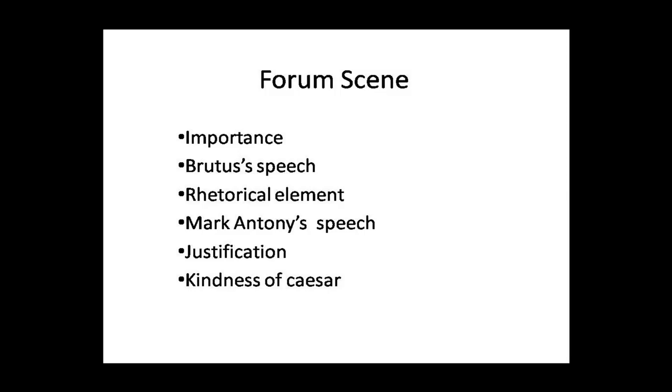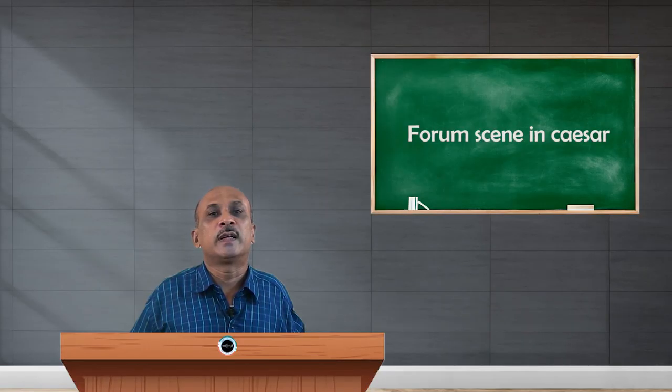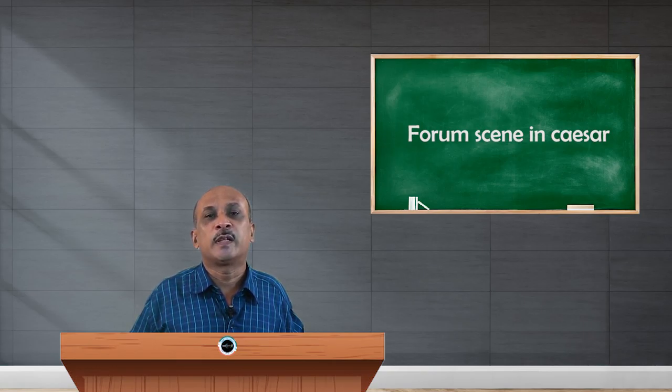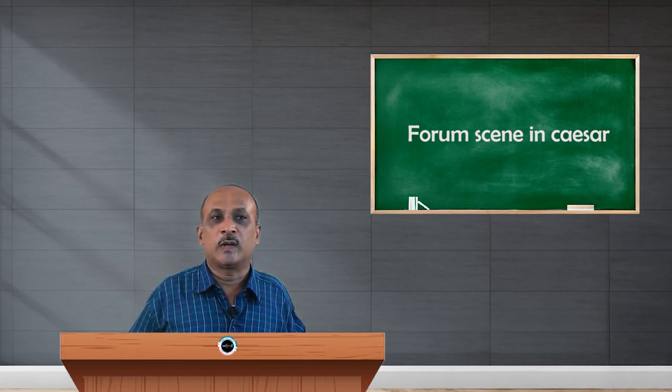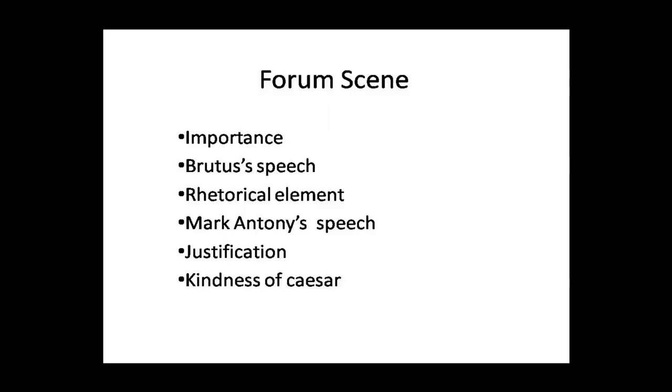The Forum scene is the consequential scene that is most significant in the play after the murder of Julius Caesar. After murdering Julius Caesar with the help of his conspirator friends, Brutus thinks that he has to address the citizens.